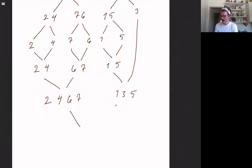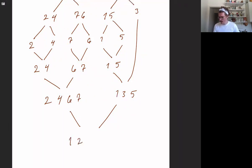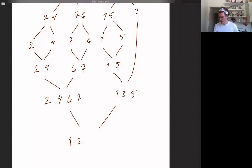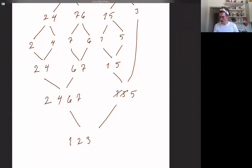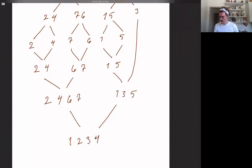Finally, merging these two lists — we saw an example like this before — the smaller element is 1. Striking that off, the smaller element is 2. Now the smaller element is 3, then 4, then 5, then 6, then 7. And now our list is sorted.